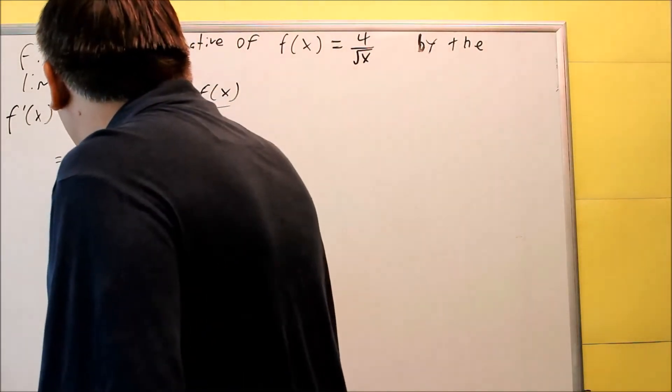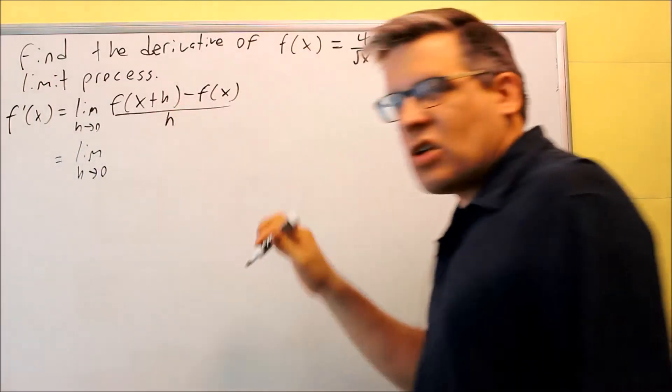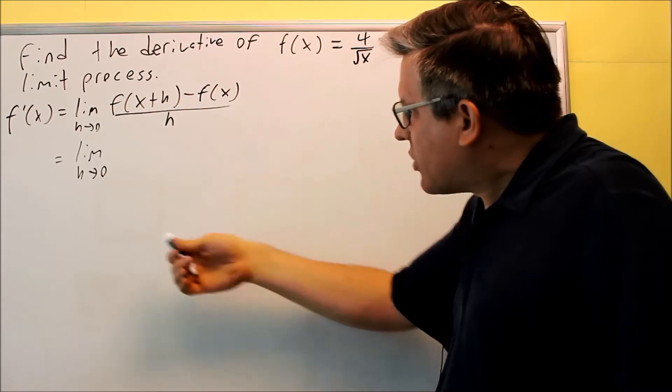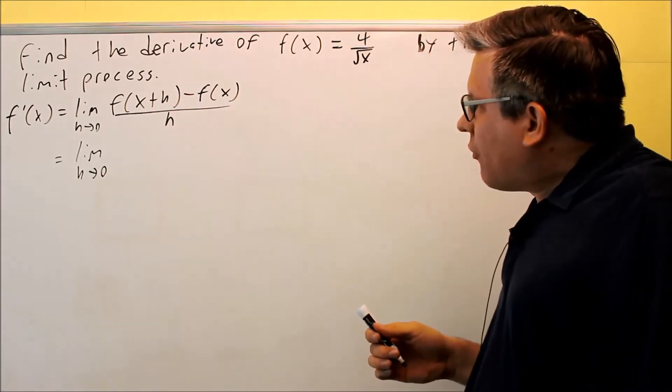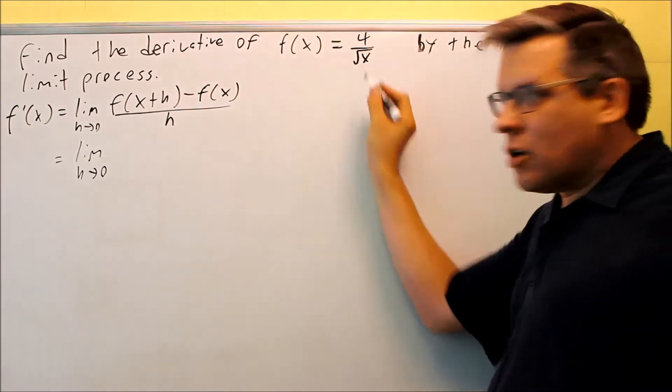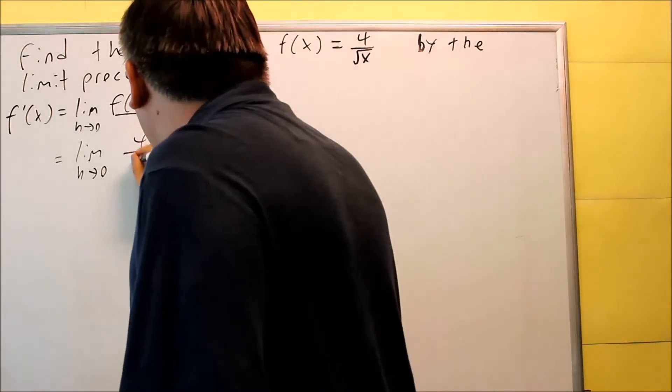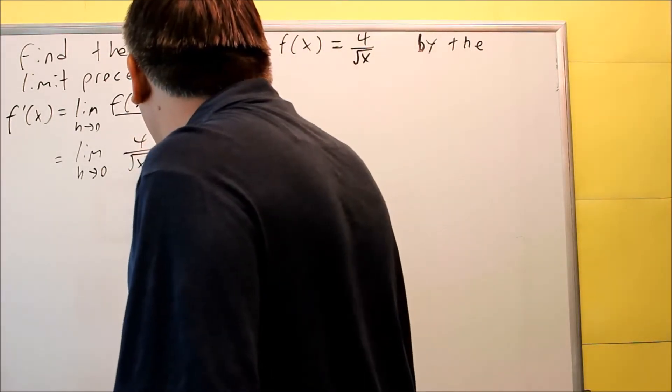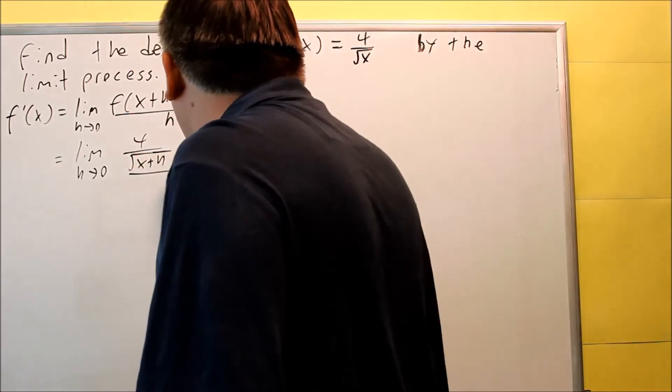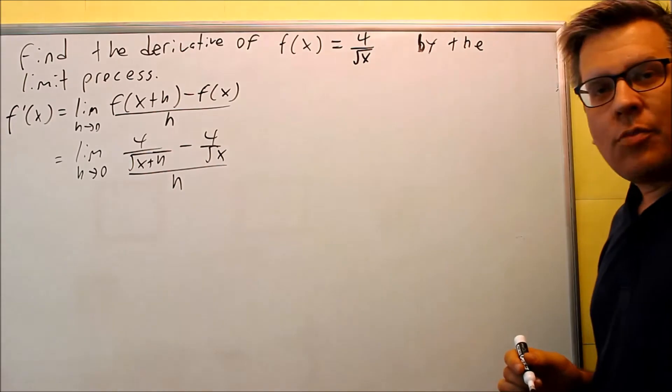We're first going to follow this formula. This is always the same formula we're using to find derivatives using limit process. We're going to find f(x+h). To do that, you're going to put x+h in here for x. So I have 4 over the square root of x+h, and then minus 4 over the square root of x. All this is going to be divided by h.